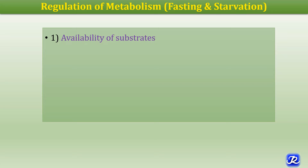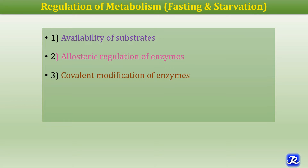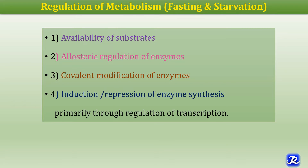The first is availability of substrates. Second is allosteric regulation of enzymes. Third is covalent modifications of enzymes, that is phosphorylation by glucagon. And fourth is induction or repression of enzyme synthesis, which occurs at the gene level primarily through regulation of transcription.